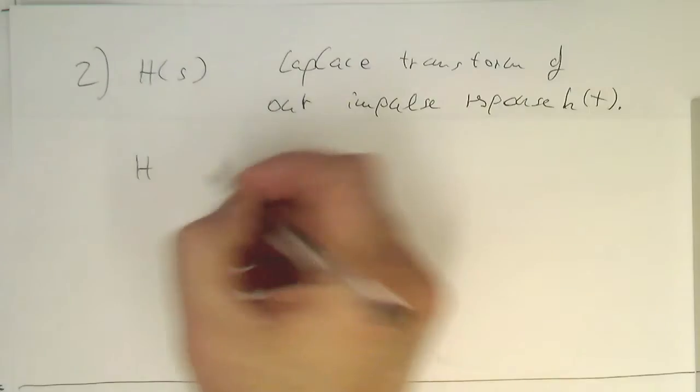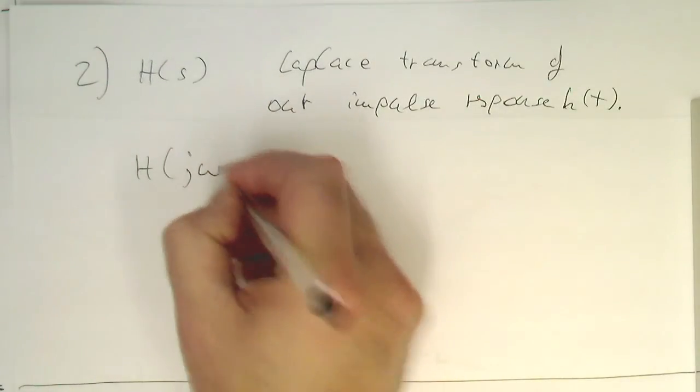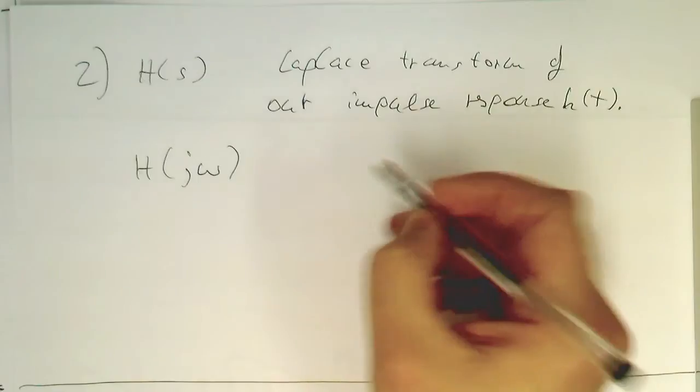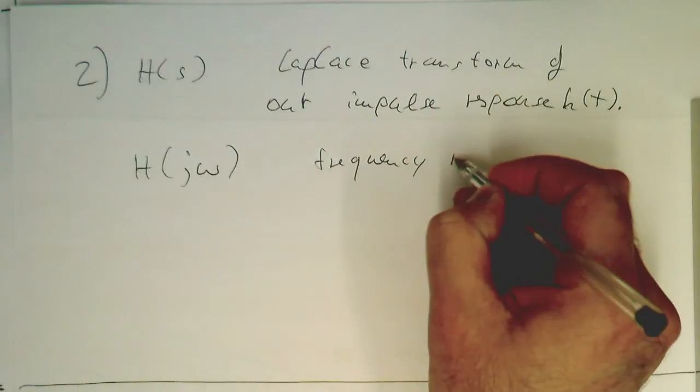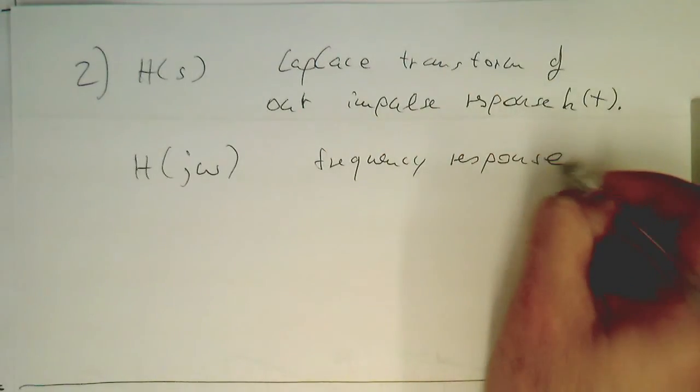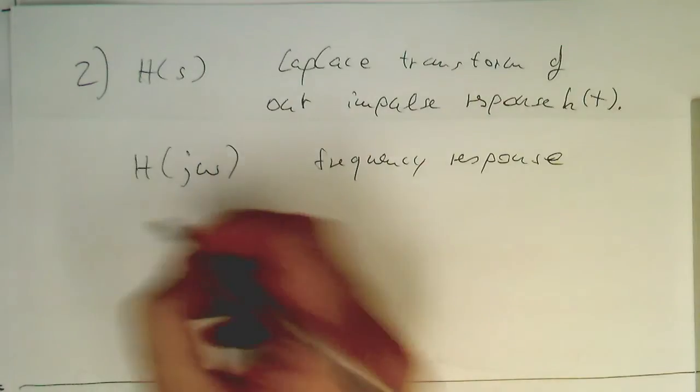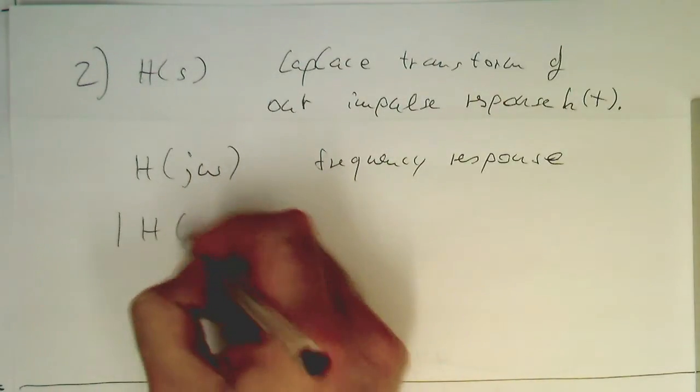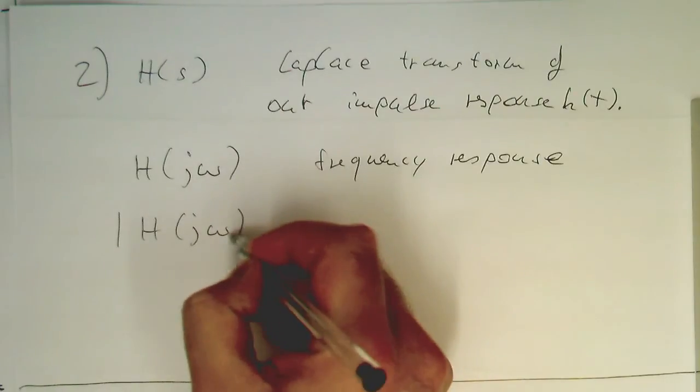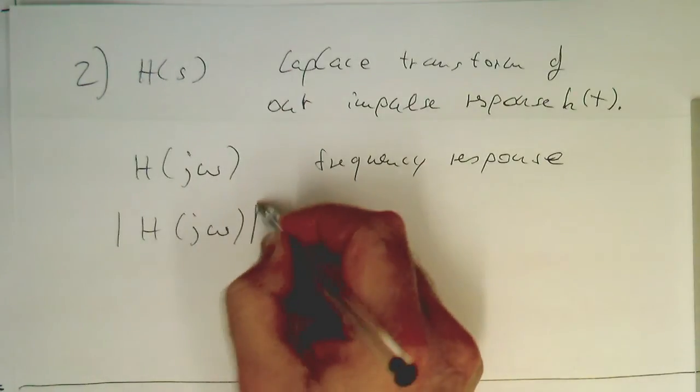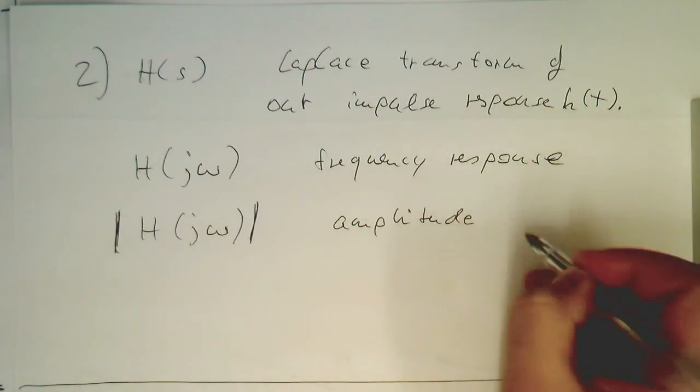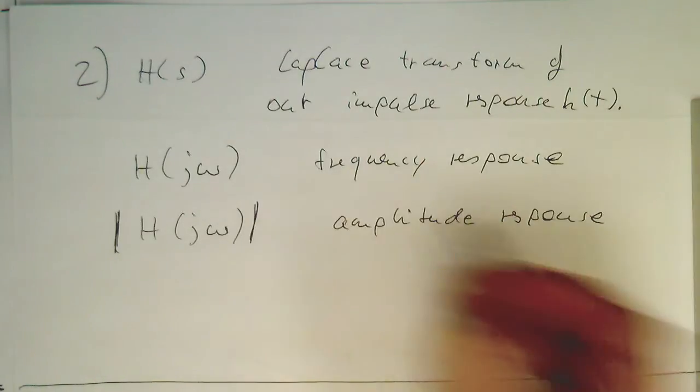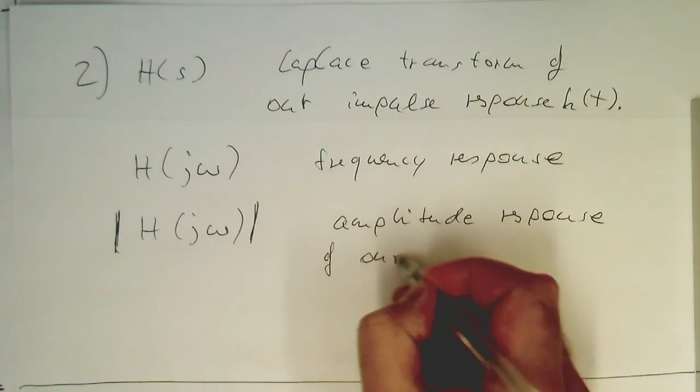Then, with our definition of the Laplace transform, if you're putting a H of j omega there, then this gives us a frequency response. Usually what we would like to plot is the absolute value or the abs in MATLAB. Something like this, just to get the amplitude response. This is essentially the amplitude response of our filter.